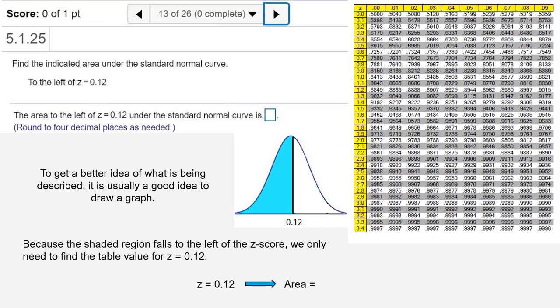The table value for 0.12 is 0.5478. That's going to be the area, and that's your answer.